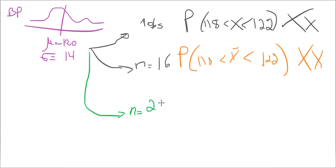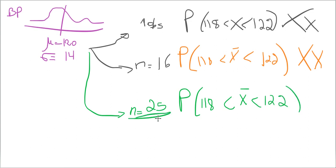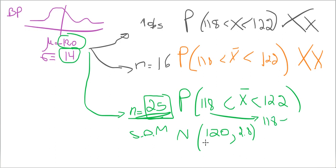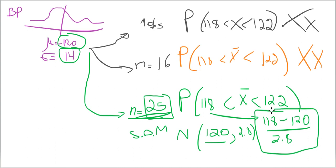The only time you can calculate the probability is when n is greater than or equal to 25. So if n equals 25 and you want P(X̄ between 118 and 122), now we can find the answer. The sampling distribution of the mean will be normal with mu equal to 120, and sigma_X̄ equals 14 divided by the square root of 25, which is 5 — giving 2.8. Then the Z transformation for 118 becomes (118 minus 120) divided by 2.8, and you proceed the same way to find your probability.